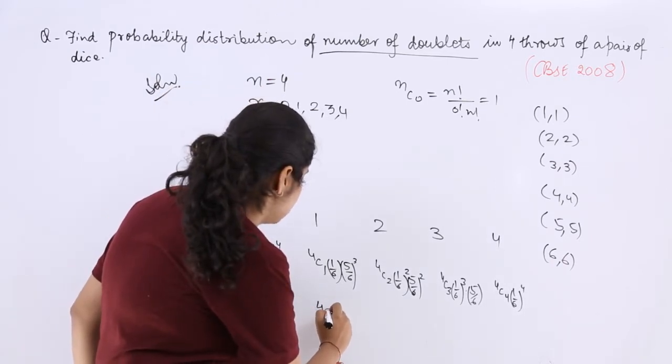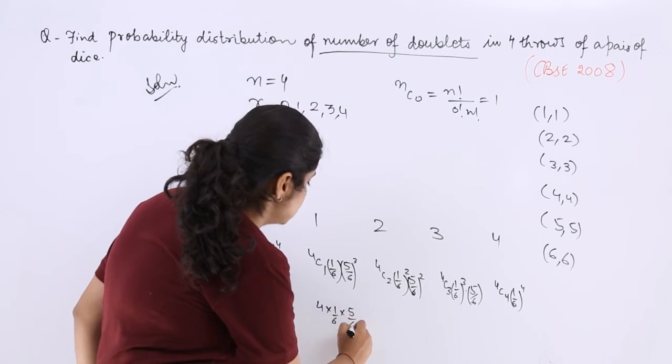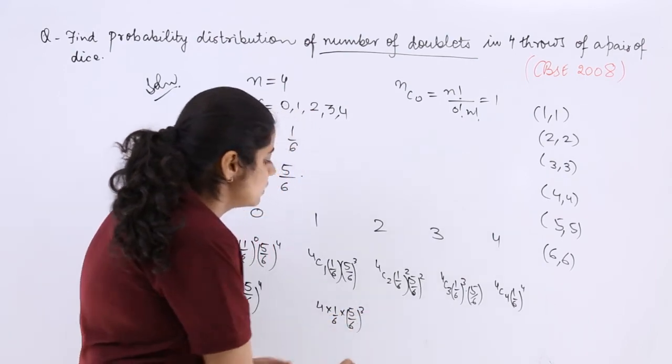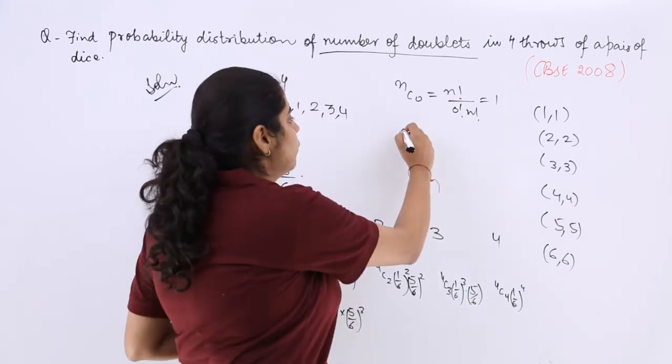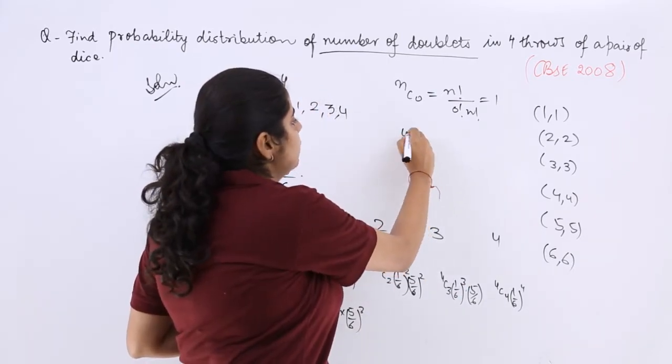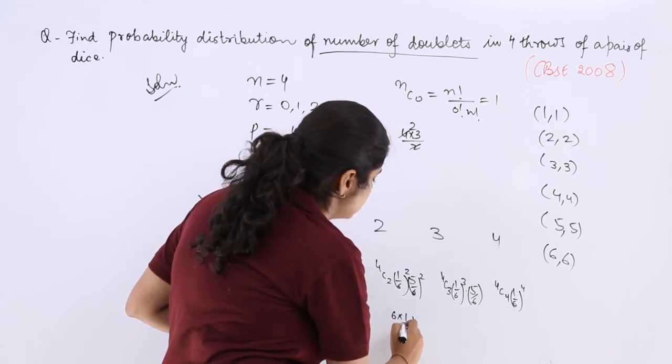Here what about this part? This is nothing but 4 multiply by 1 by 6 multiply by 5 by 6 whole cube. You want, you can cancel certain things and then leave the answer. Here you see 4C2, you can solve what is 4C2. This is nothing but 6. So 6 multiply by 1 by 6 whole square multiply by 5 by 6 whole square.